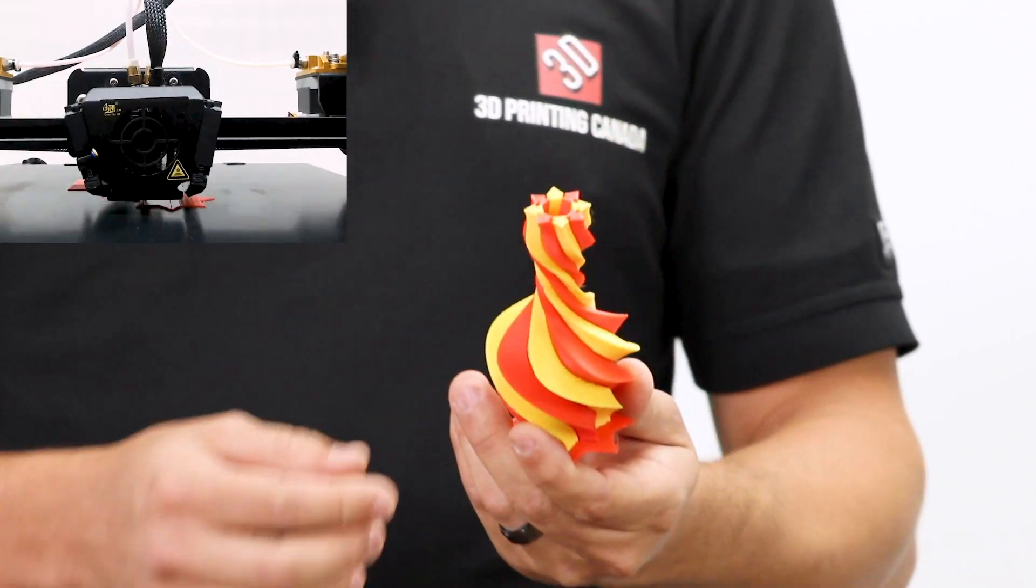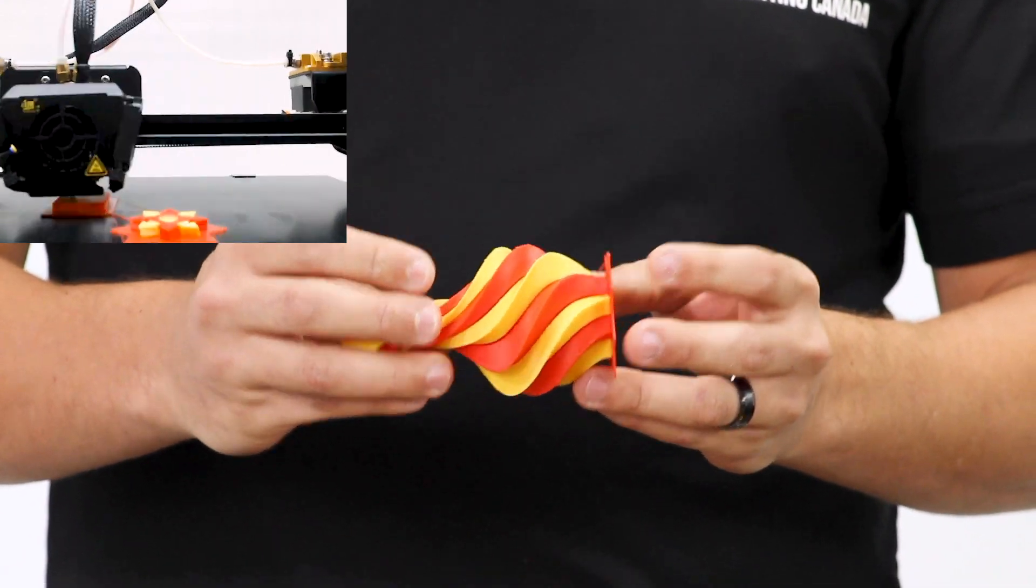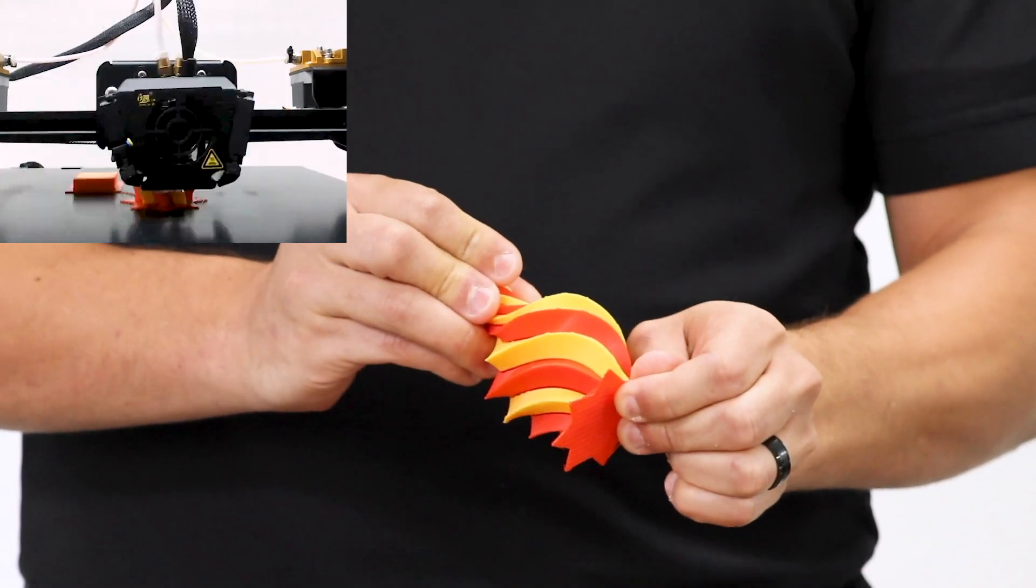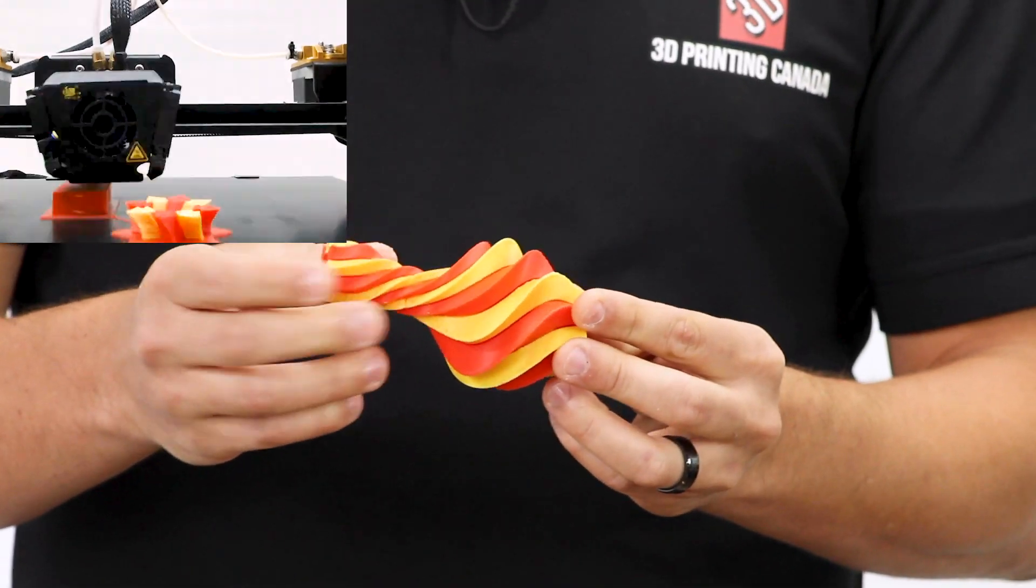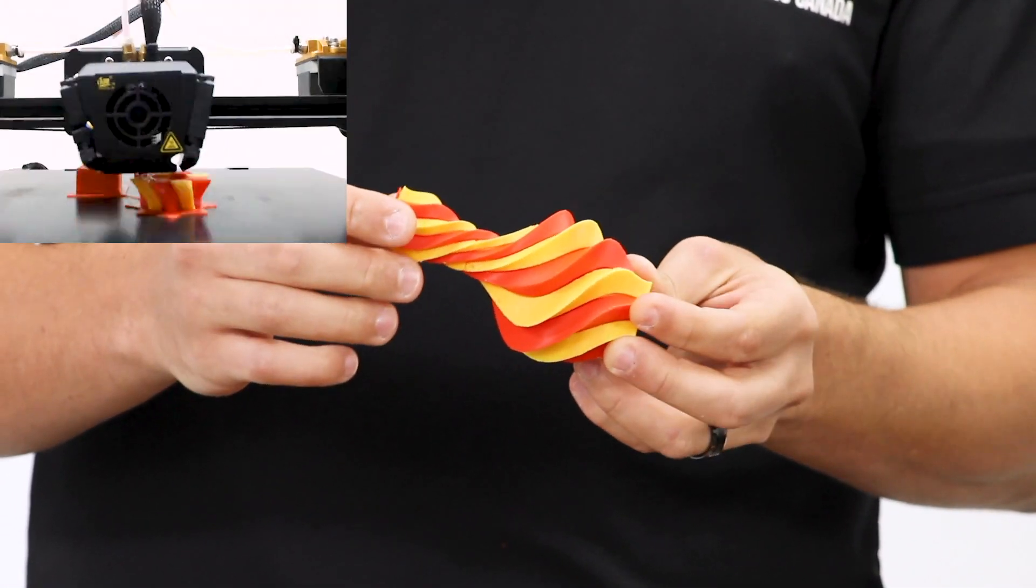The vase was another story. There's a little bit of inconsistent extrusion layer by layer. This is just the raft that was part of the G-code. But there's inconsistent extrusion, a little bit of drooping and blobbing at the ends.